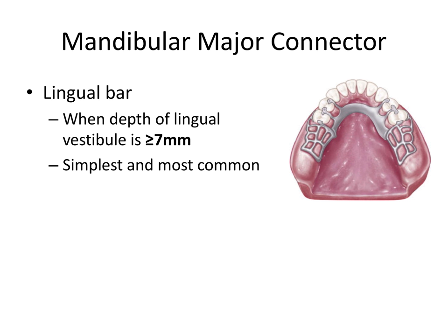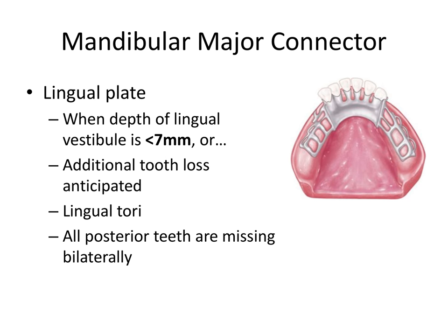Now let's talk about mandibular major connectors. First we have the lingual bar design. The lingual bar is preferred when the depth of the lingual vestibule is greater than or equal to seven millimeters — an important number to remember for the board exam. The lingual vestibule is measured from the lingual gingival margin of the teeth to wherever the lingual frenum starts. If there's greater than or equal to seven millimeters between those landmarks, there's enough room for the metal bar without impinging on the musculature of the tongue. This is the simplest and most common design.